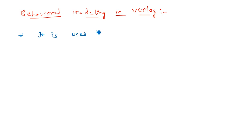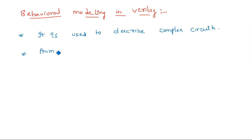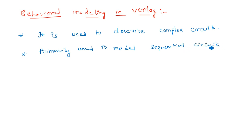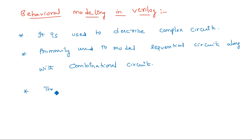Behavioral modeling is used to describe complex circuits. It is primarily used to model sequential circuits along with combinational circuits. So it covers both sequential and combinational design.